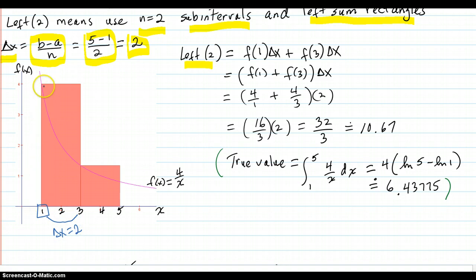You use the left boundary and compute the f of x value there. The f of x value there is 4 over 1, because the function is 4 over x. 4 over 1.